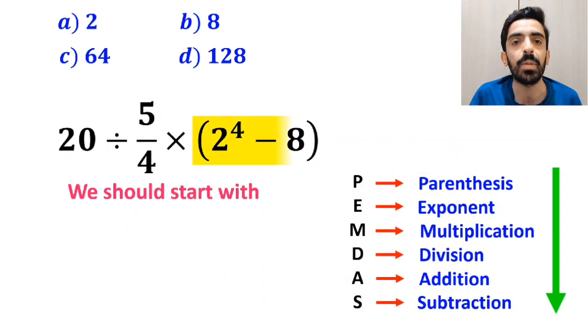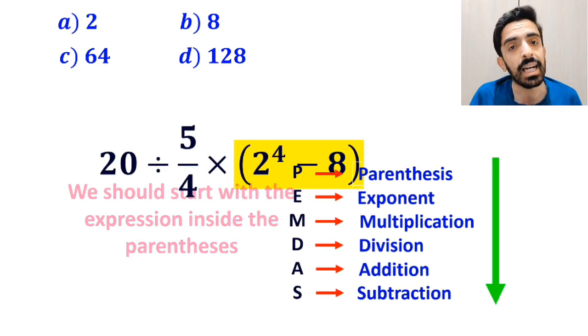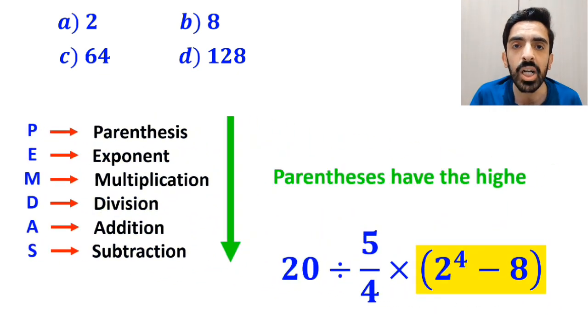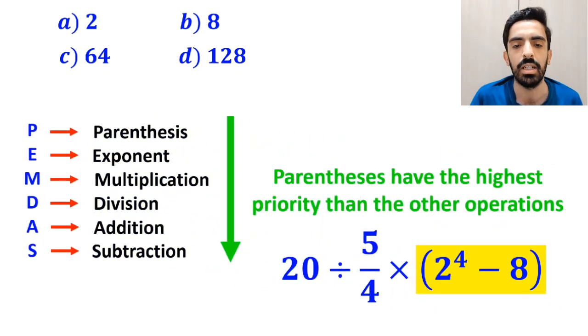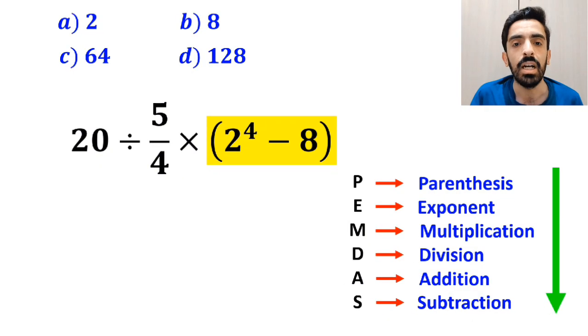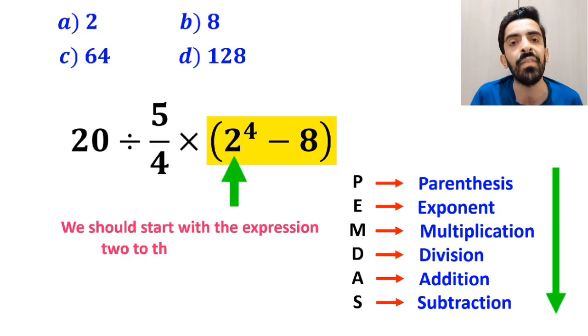So, we should start with the expression inside the parentheses, because parentheses have the highest priority than the other operations. And inside the parentheses, we should start with the expression 2 to the power of 4.